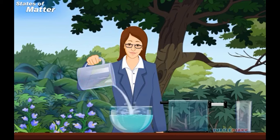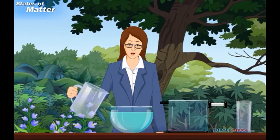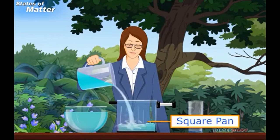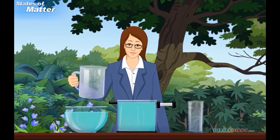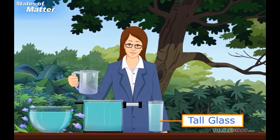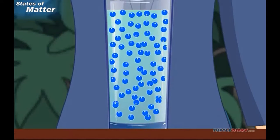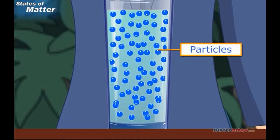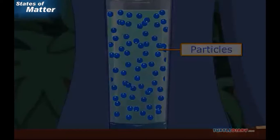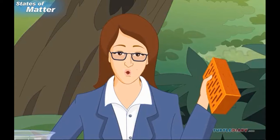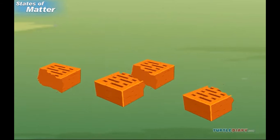Now let's learn about liquids. Liquids do not have a shape — they take the shape of the container they're in. Water can fill a round bowl, a square pan, or a tall glass. Liquids are also made of little pieces called particles. The particles of a liquid are held together loosely — they move and slide across each other. When you pour water, it flows into a container; it's not like a solid.